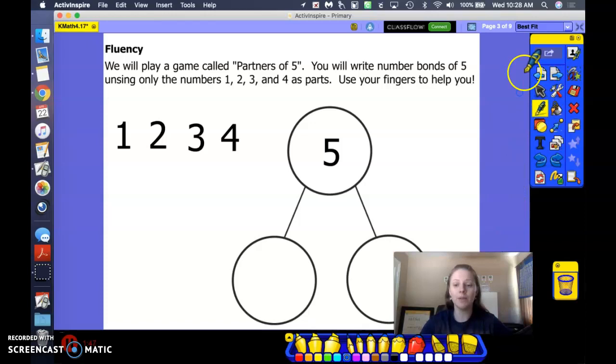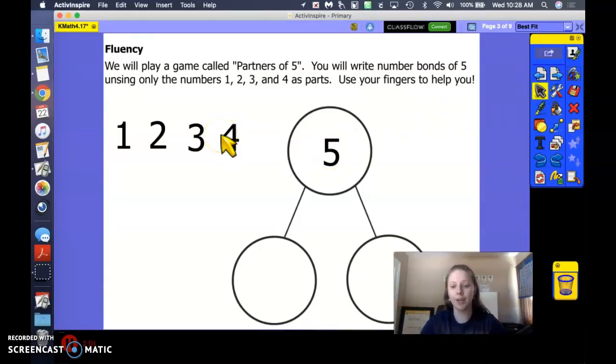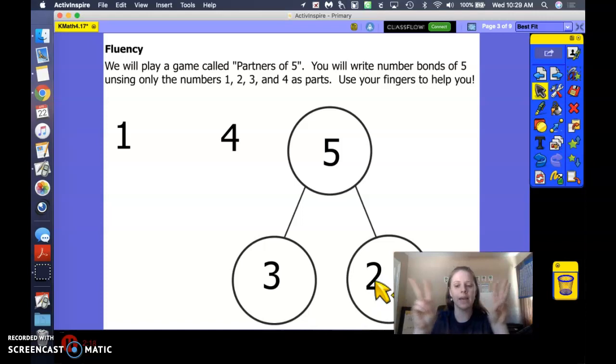So here's another game that you can play. If you don't have cubes and you don't have a dice, you can just play with your fingers or just the numerals. So our total is 5 and we need to figure out what numbers will match up to make 5. Let's start with the number 3. If I show you 3, how many more to make 5? 2. Great job. 3, let's say our sentence, 3 and 2 makes 5.